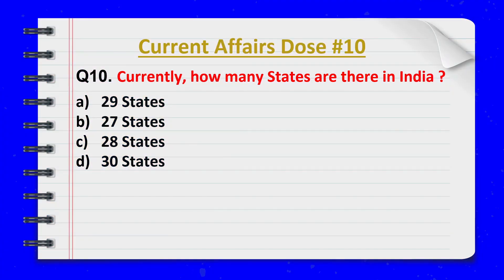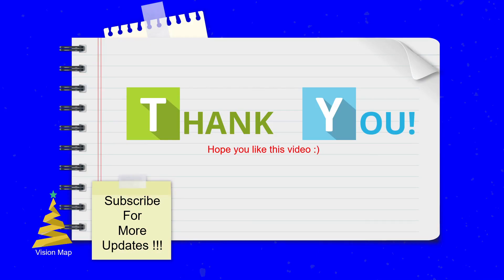Last question. Currently, how many states are there in India? Correct answer: option C — 28 states. Subscribe to Vision Map Channel.